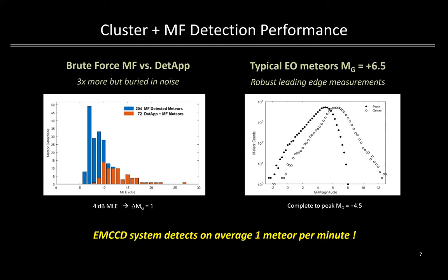How well does the existing hybrid detection scheme perform? On the left panel are shown the dead app detections in orange down to approximately 10 dB MLE. However, a brute force match filter run on four 10-minute imagery sets shows all the dead app detections plus an additional three times more fainter meteors — nearly an additional full magnitude fainter. It should be noted that those additional meteors are deeply buried in the noise and very faint. While it is one thing to detect those meteors, it does require more signal-to-noise to reliably estimate the leading edge positions for good quality orbital estimation. Thus, we feel that perhaps half of the additional detections could be useful if a more sensitive front end detector that meets the runtime requirement could be found.